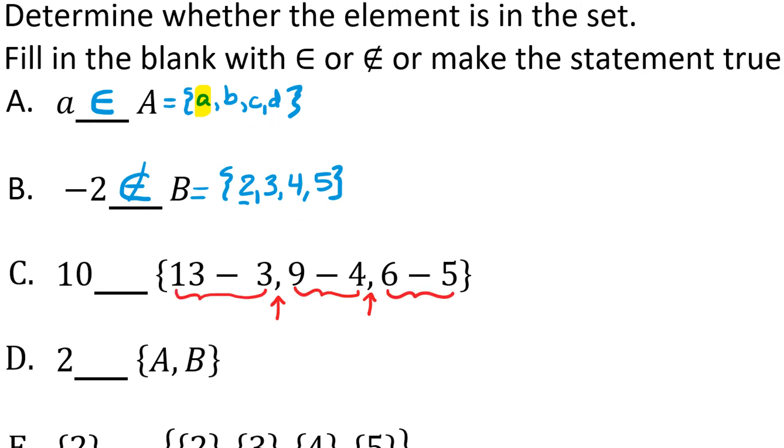So instead, there are only three elements in this set. The first element, 13 minus 3, is 10. The second element, 9 minus 4, is 5. And the third element, 6 minus 5, is 1. So we could have written this set as 10, comma 5, comma 1 with the curvy brackets. So is 10 an element of that set? It absolutely is. We see it right there. So we're going to say yes, 10 is an element of this set.